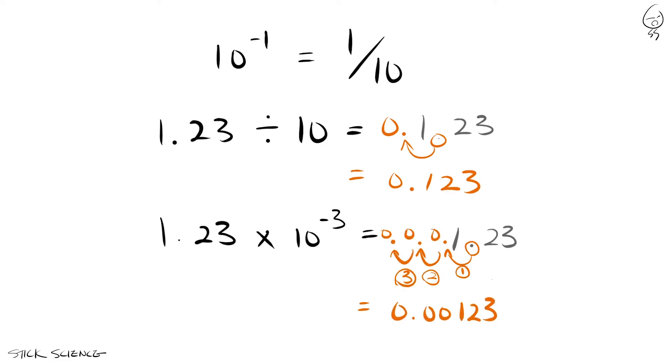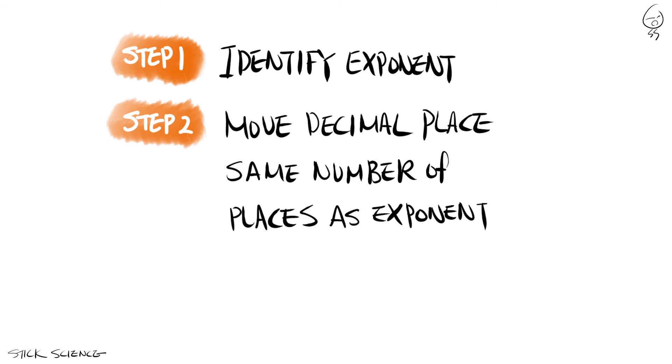Let's modify the rule to accommodate negative exponents. It's the same as before, but if the exponent is positive, we move the decimal point right. If negative, we move it to the left.